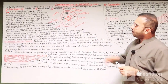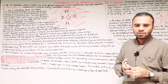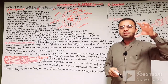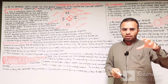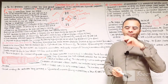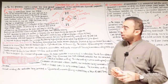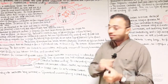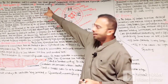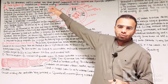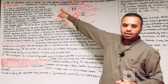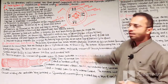DC generators and motors have the same general construction. All DC machines have 5 principal components. Number one is the field system, second is the armature core, third is the armature winding which is wound on the core of the armature, fourth is the commutator, and fifth are the brushes.